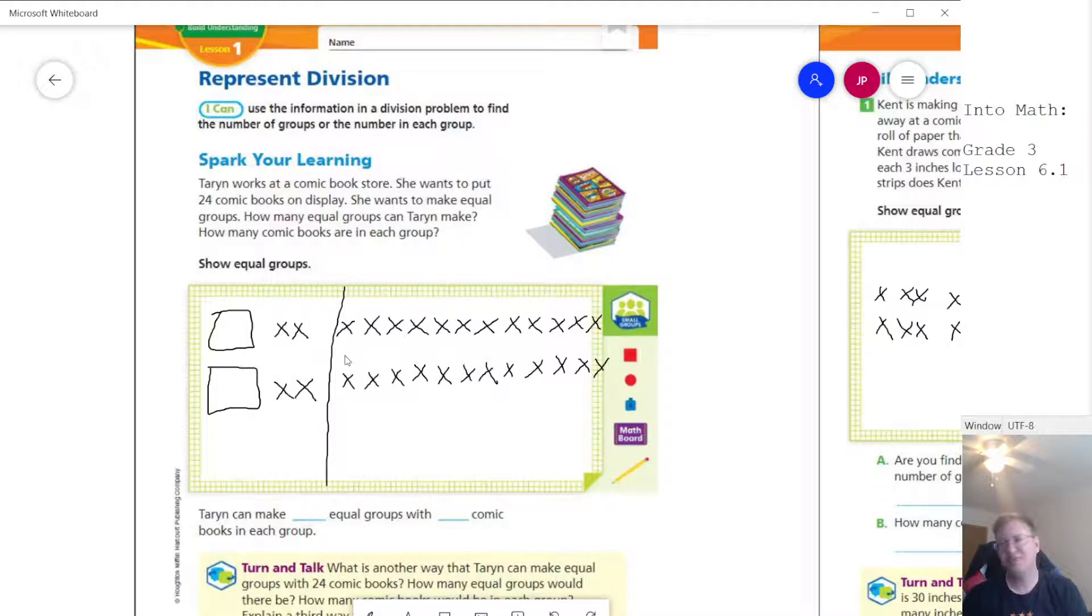I've drawn a couple different pictures to help us discuss this. Taryn works at a comic book store and wants to put 24 comic books on display. She wants to make equal groups, and we want to figure out how many equal groups and how many comic books will go in each group.